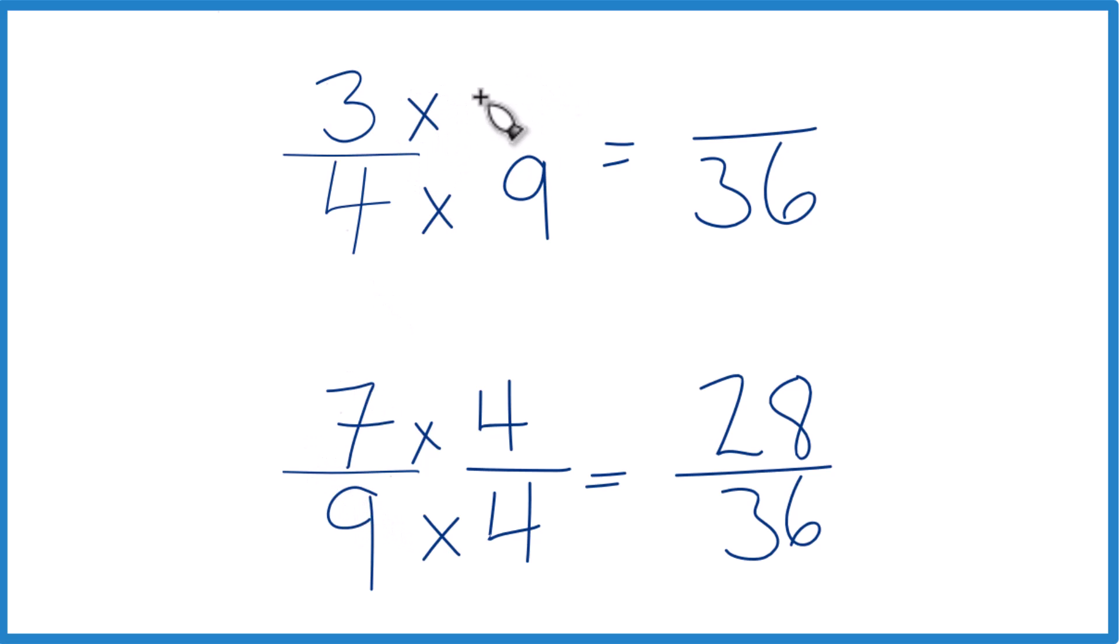Up here, multiply by 9, and that gives us 3 times 9 is 27.